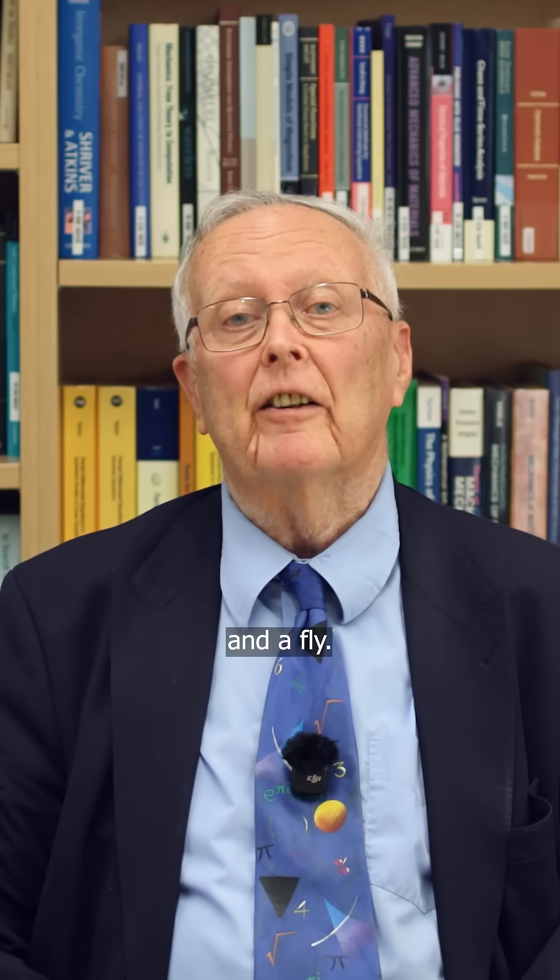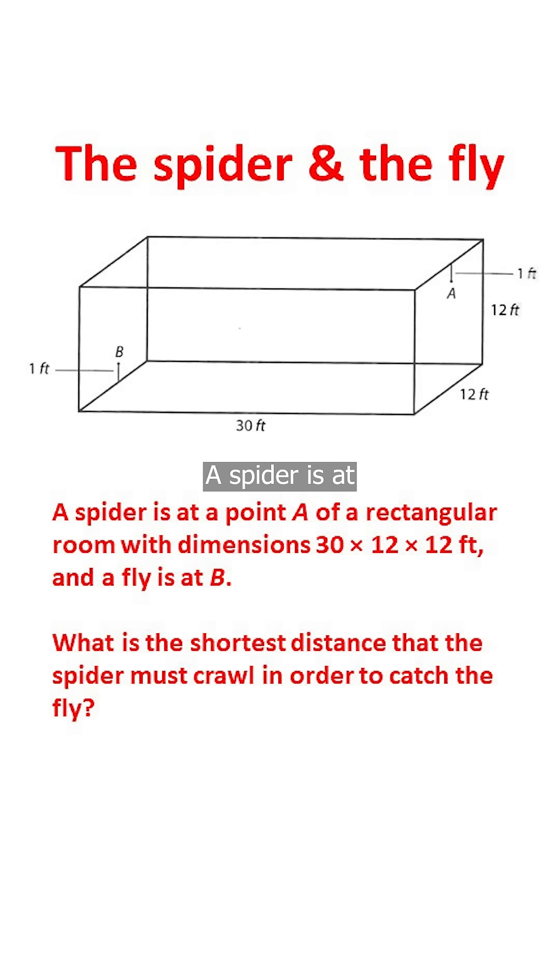Here is a three-dimensional puzzle concerning a spider and a fly. A spider is at point A of a rectangular room with dimensions 30 by 12 by 12 feet, and a fly is at B. What is the shortest distance that the spider must crawl to catch the fly?